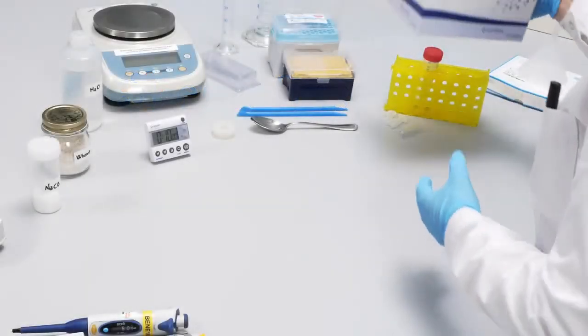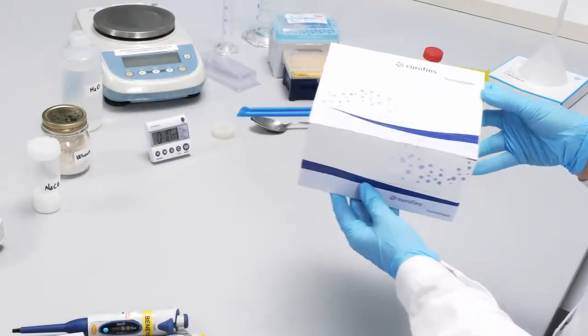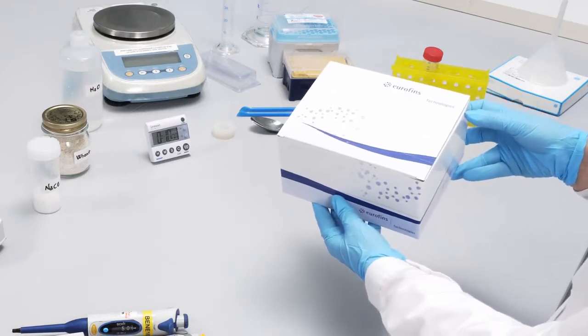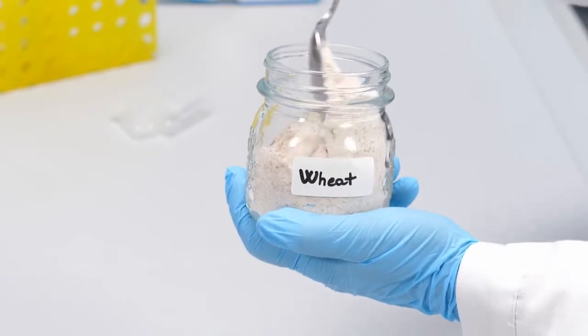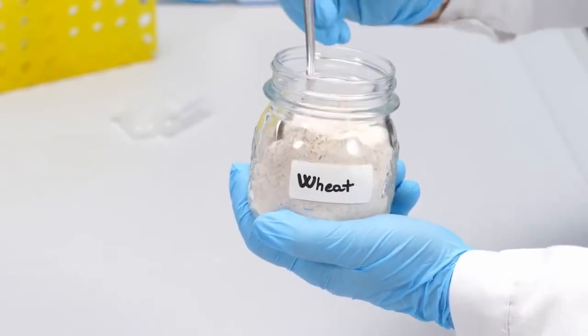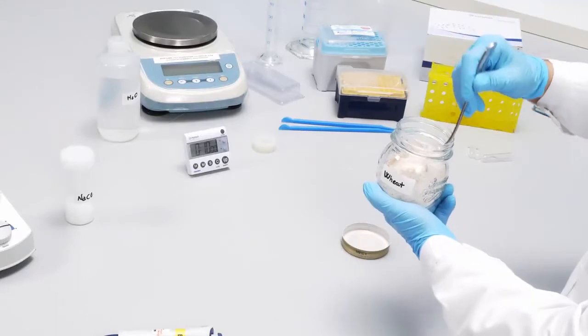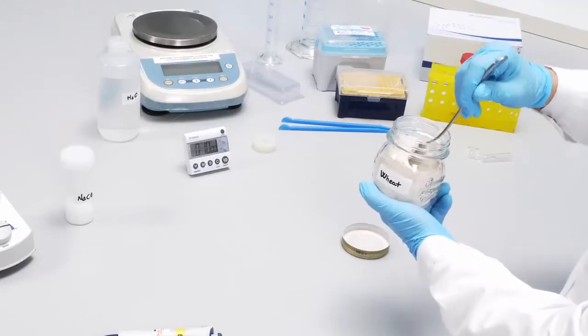H2DON is a sensitive and accurate enzyme immunoassay for the detection of deoxynivalenol in several vegetal matrixes like wheat, durum wheat, maize, barley, oats, rice, rye, feed, and feed ingredients.